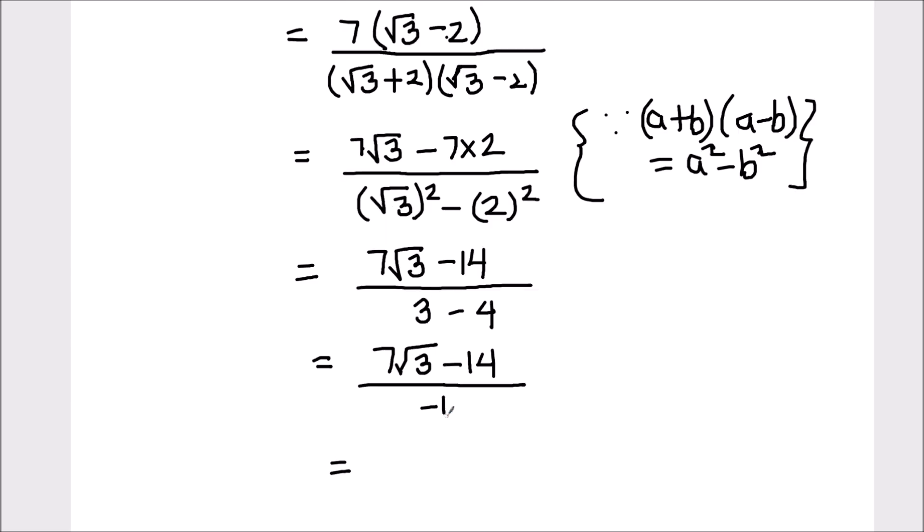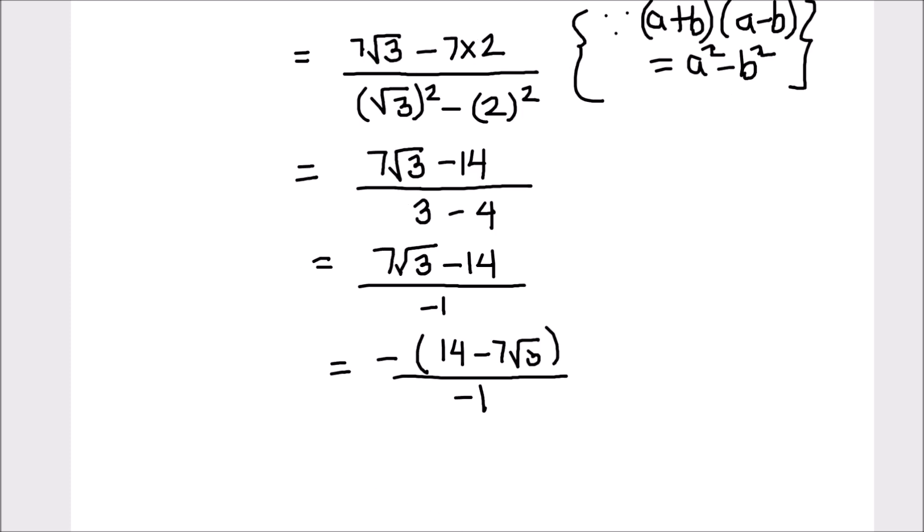As there is negative 1 in the denominator, let's take the negative sign common from the numerator. So, that's going to be 14 minus 7 root 3 divided by negative 1. This negative sign gets cancelled with the negative sign in the denominator. So, we are left with 14 minus 7 root 3.